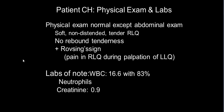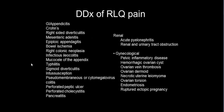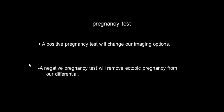On physical examination, the abdomen is soft and non-distended, with tenderness in the right lower quadrant and no rebound tenderness. Positive Rovsing's sign is noted. Lab findings show white cell count of 16.6 with 83% sensitivity and specificity, and neutrophils. Creatinine is 0.9. For differential diagnosis of right lower quadrant pain, many diseases are related to GIT, renal, or gynecological causes. A positive pregnancy test will change our imaging options, while a negative test removes ectopic pregnancy from the differential.